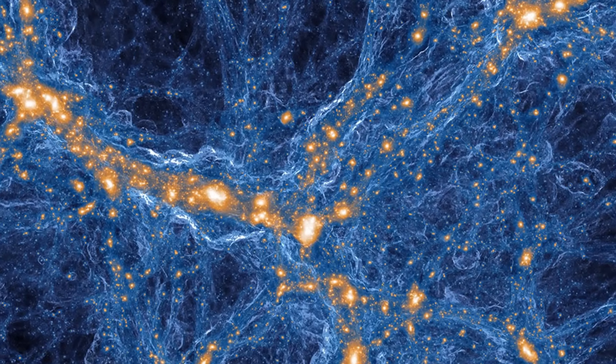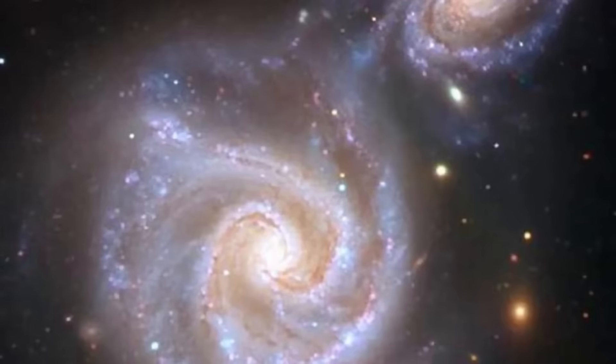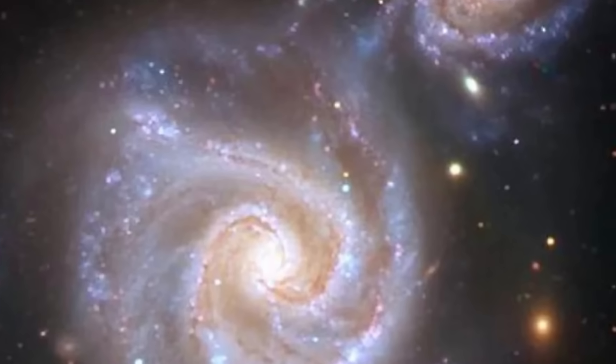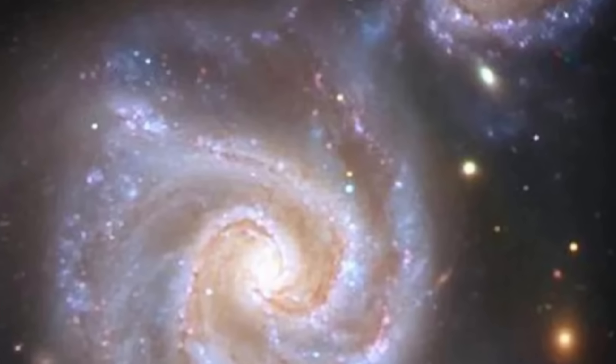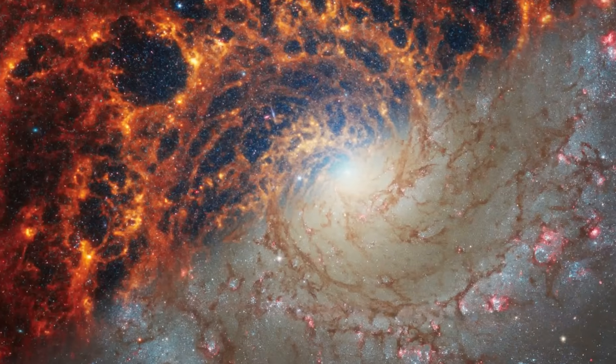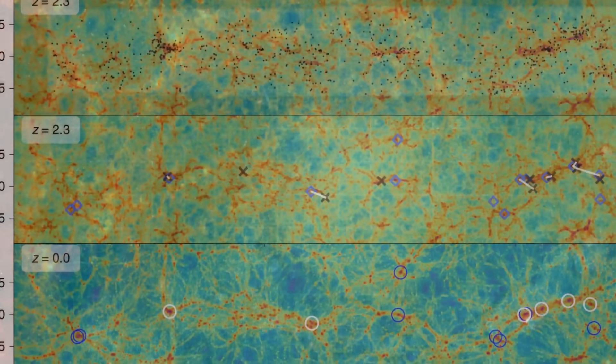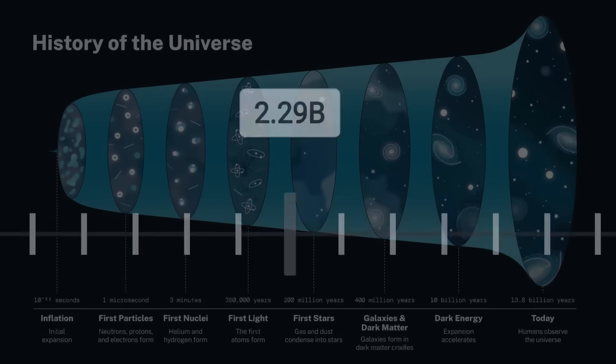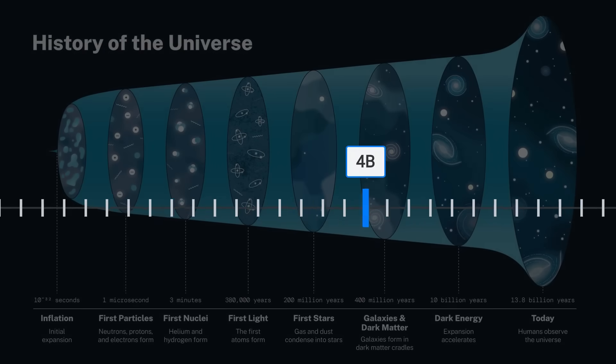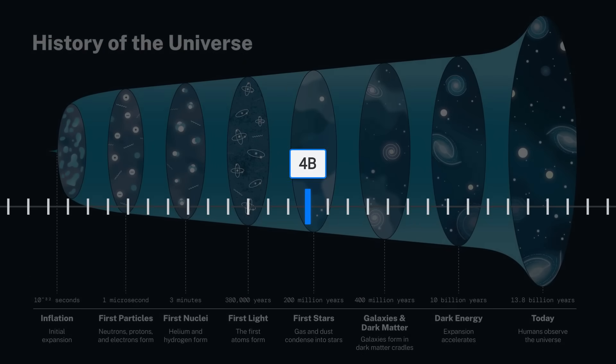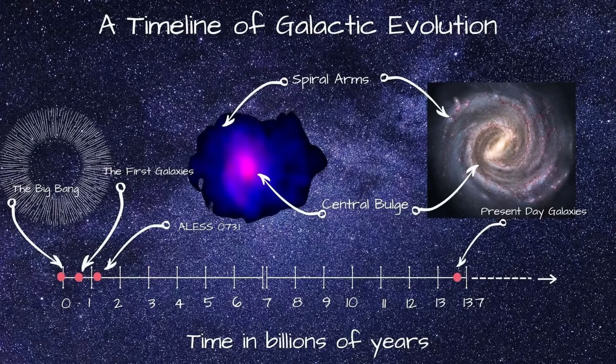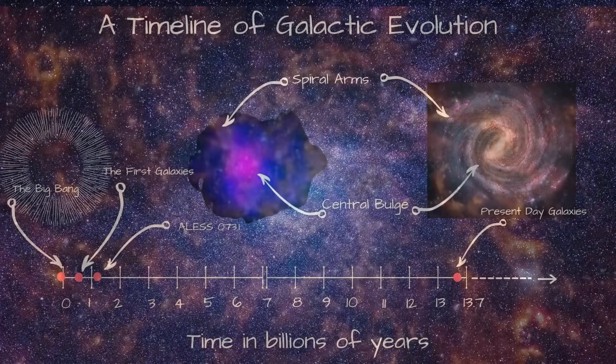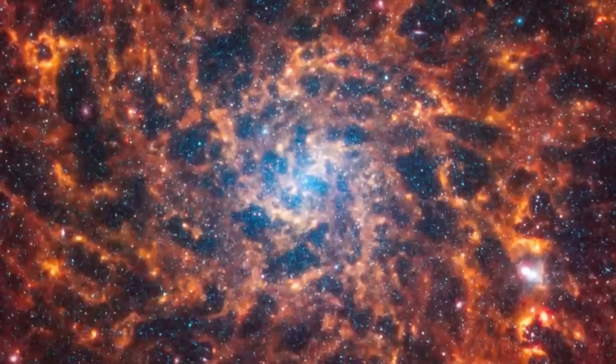But the surprises do not end there. Webb has uncovered spiral galaxies with well-defined arms, their disks stable and symmetrical, even at red-shifts between two and three. In cosmic terms, this is just a few billion years after the Big Bang. Conventional models suggested that it would take far longer for the universe to build such ordered structures.